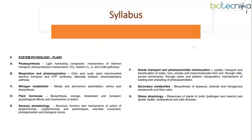To begin with, the syllabus of Unit 6 is divided into 8 subunits. We have photosynthesis, respiration, nitrogen metabolism, plant hormones, sensory photobiology, solute transport, secondary metabolites, and stress physiology.